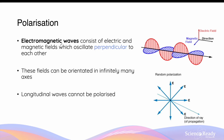Electromagnetic waves consist of electric and magnetic fields which oscillate perpendicularly to one another. While these two fields must remain perpendicular at all times, there can be many pairs of these waves which are orientated at different angles. The orientation of an electric field doesn't need to be vertical as what's normally illustrated in most diagrams, but it can be at an angle.